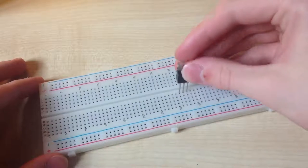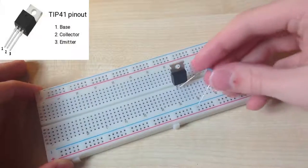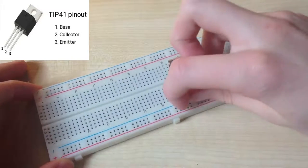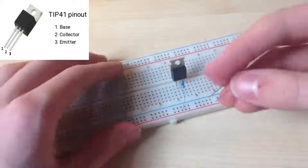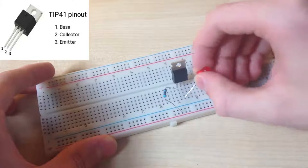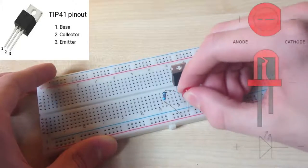First off take our transistor and put it into breadboard. Here you can see diagram of our TIP 41C transistor. Then place 22 kΩ resistor between base and positive rail. Then connect negative leg of LED to base and positive leg to ground rail.